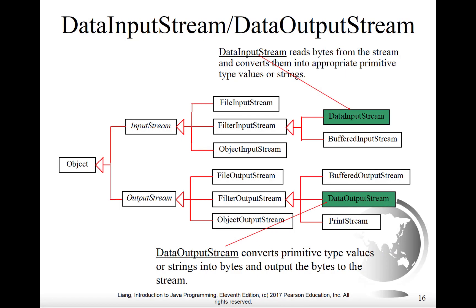Those last two classes on the previous slide are one inheritance level up from what we'll actually use. We'll be using DataInputStream, which talks to FilterInputStream, and DataOutputStream, which talks to FilterOutputStream. This is where the conversion between primitive types and strings of bytes will occur.